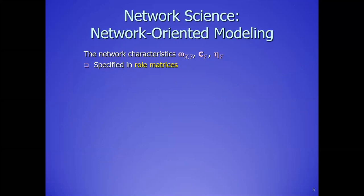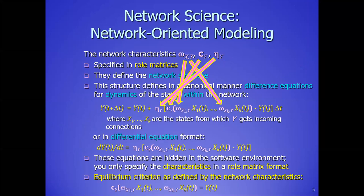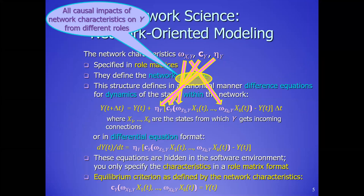The perspective is from a network-oriented modeling site where you have raw matrices and hidden equations, where the X influences the Y in the standard causal network sense. And then also the characteristics have their influences from their own specific roles.